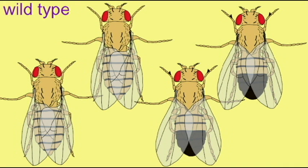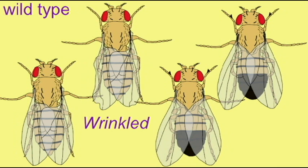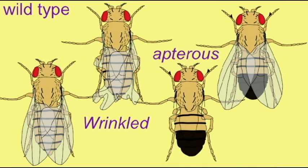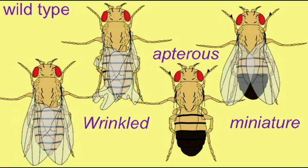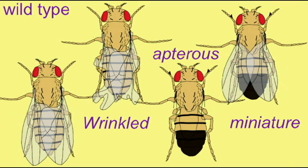Wild-type wings are rounded at the ends and extend past the tip of the abdomen. A number of mutations affect wings, such as some causing a wrinkling of the wings, some causing wings to be reduced as in the vestigial mutation or even absent in the apterous mutation. Some may affect the length of the wings as in the mutation miniature, or affect the shape of the wing as in dumpy. So there are a number of mutations which affect wing size, shape, or presence.